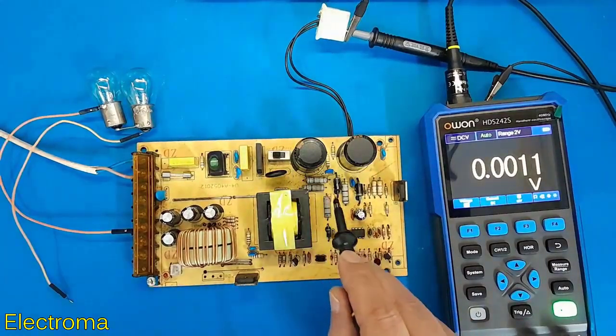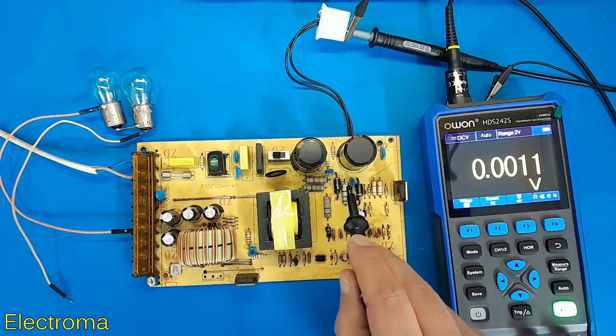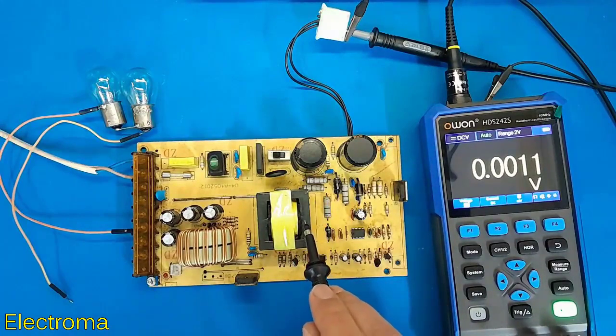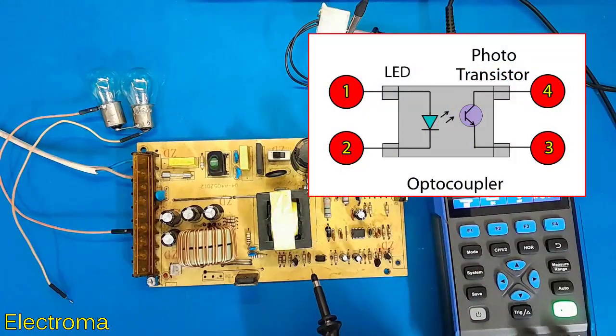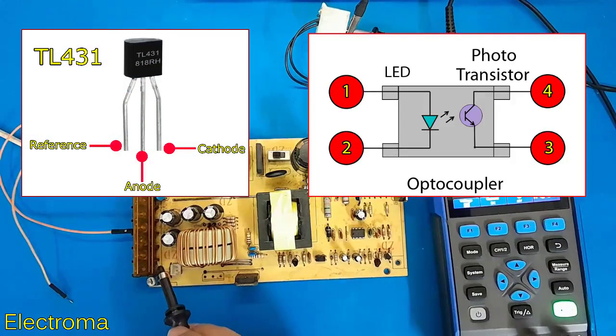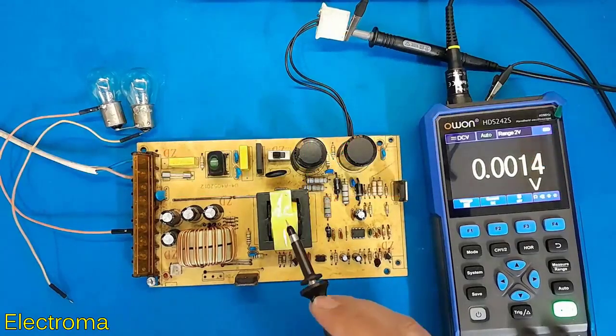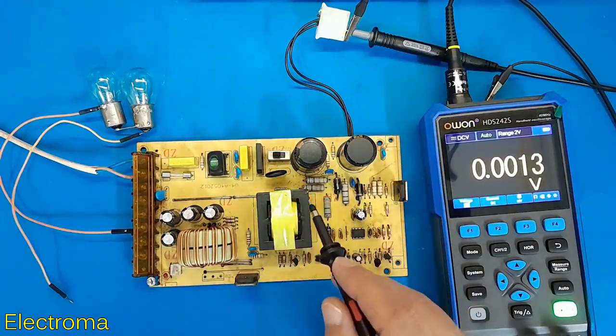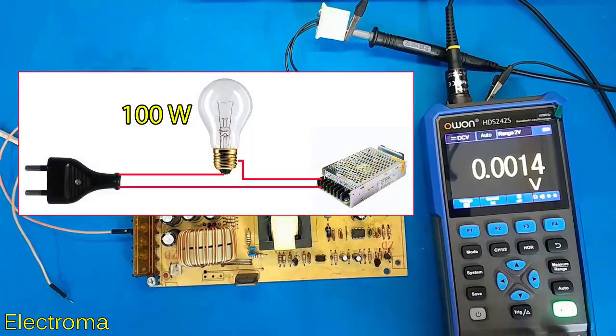This resistor, diode and capacitor are the clamp circuit for the transformer. This optocoupler is for isolating the circuit and this part is TL431 which is a shunt regulator. The reference pin receives the output voltage sample. Now I connect the device to the city electricity with the help of the series lamp. The LED turns on.